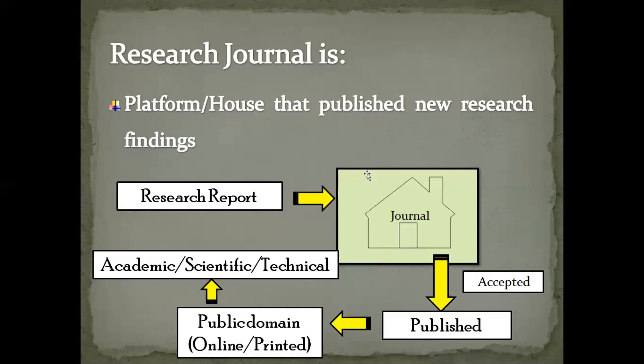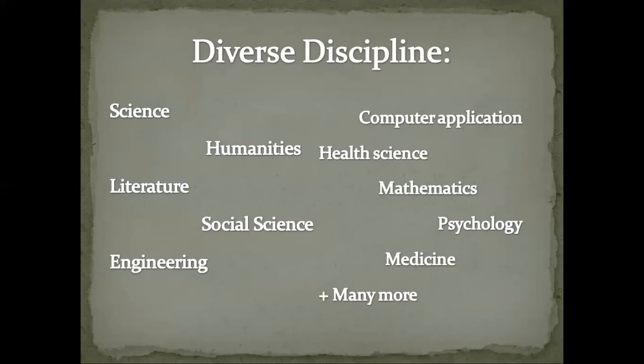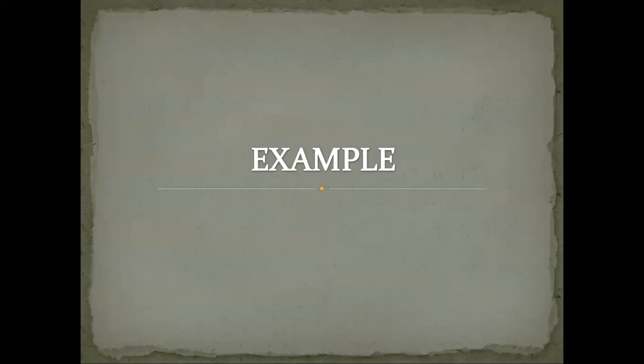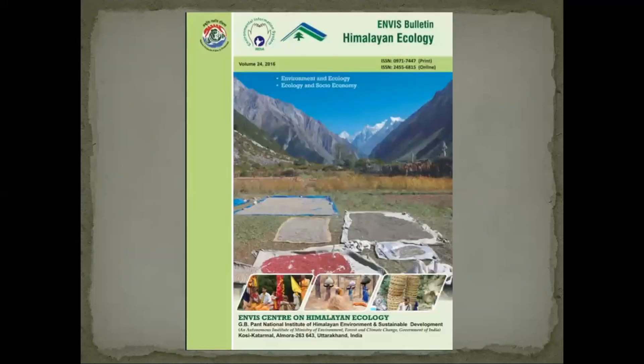Once published and available in the public domain — in the form of an online or printed format — the information or knowledge will be accessible to the public and can be used for academic as well as scientific purposes. There are thousands of research journals; however, they vary from one another in terms of their discipline, subject branch, or themes.